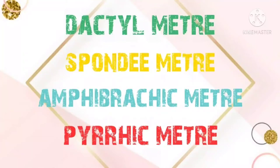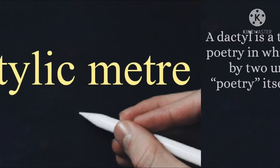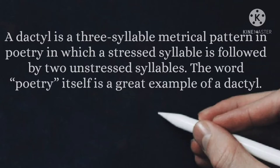Hello friends, let's start with the Dactylic, Spondee, Amphibrachic, and Pyrrhic meter. So firstly, begin with Dactylic meter. A Dactylic is a three-syllable metrical pattern in poetry in which a stressed syllable is followed by two unstressed syllables. The word 'poetry' itself is a great example of Dactylic — first stressed and then two unstressed syllables.